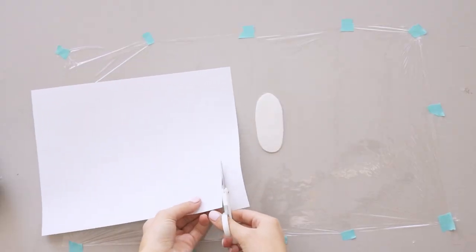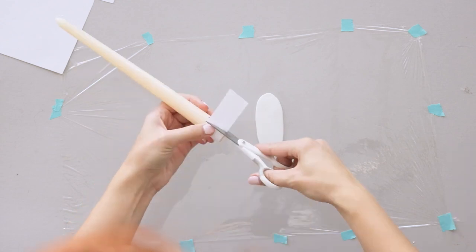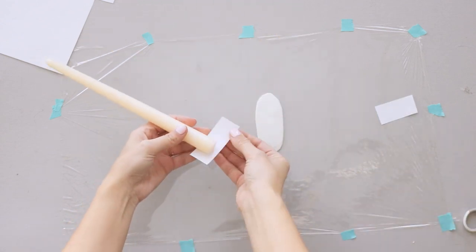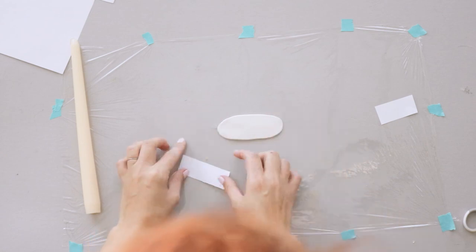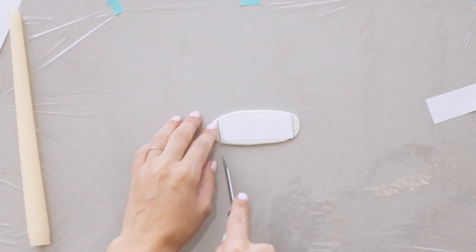Next, I used some paper and wrapped it around the base of my candle to measure how big I wanted the candle holder base to be. Once I had my paper pattern cut out, I laid it over my rolled-out Sugru and used it to guide my knife to cut out my candle base.